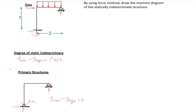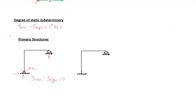Let's look at another primary structure. This time I'm going to maintain the fixed support here and remove the reaction force at the other support, turning it into a redundant force X1. So there will be no more support there — just a redundant force X1. This is the second primary structure.